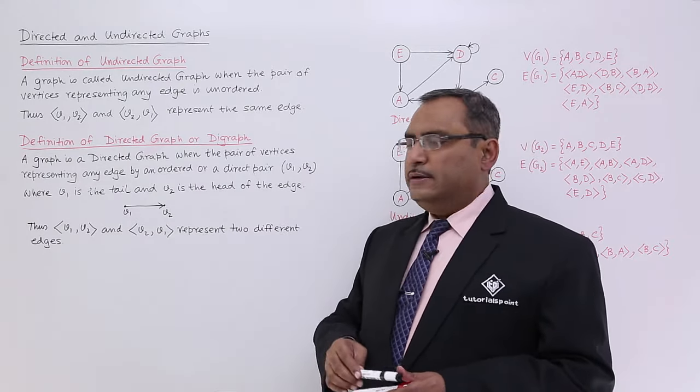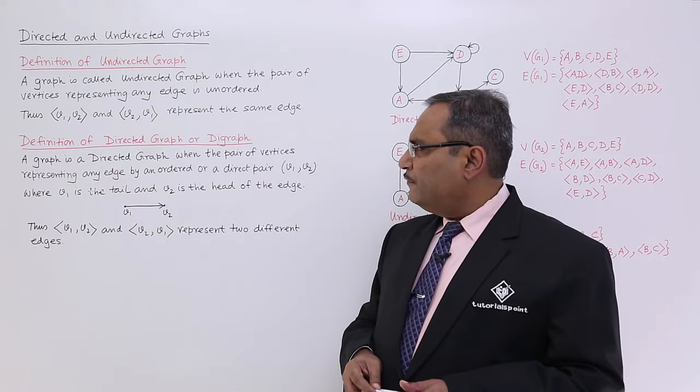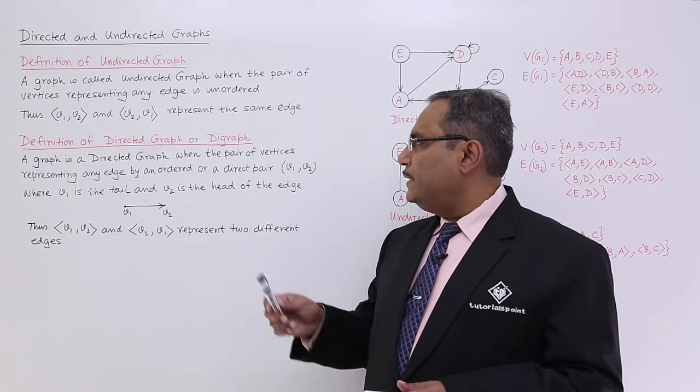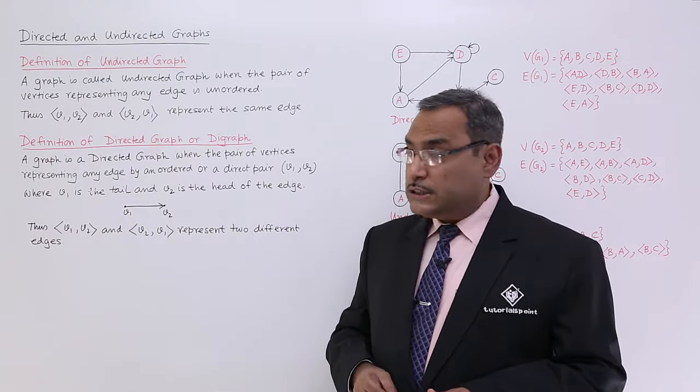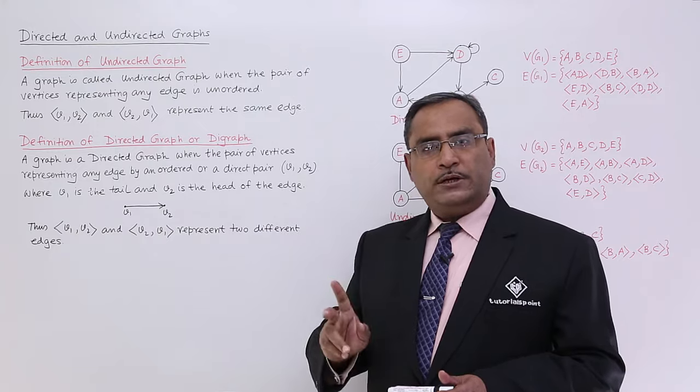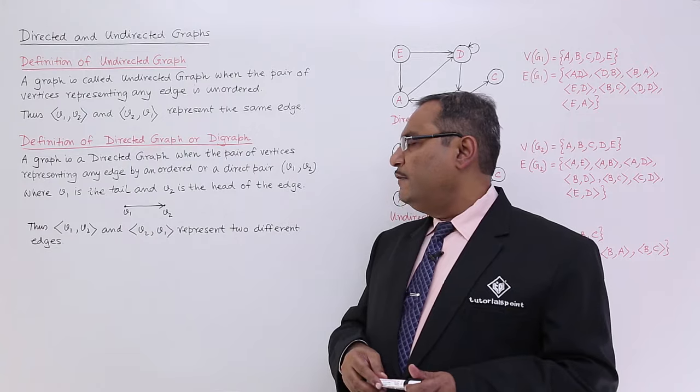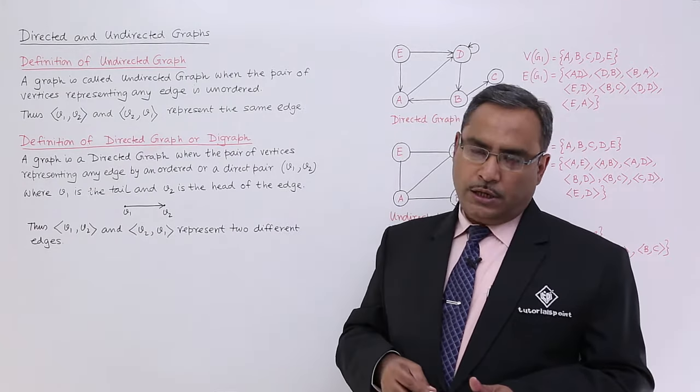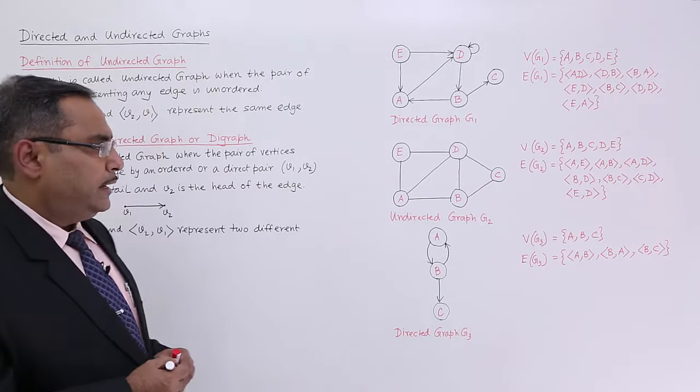In case of directed graph, also in short it will be called as digraph, a graph is a directed graph when the pair of vertices representing any edge by an ordered or a direct pair. So ordered pair or direct pair V1 V2. Here V1 is the tail and V2 is the head of the edge.